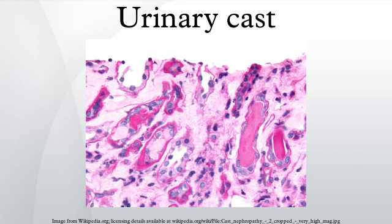In nephritic syndrome, many additional types of casts include broad and waxy casts if the condition is chronic. Fatty casts are formed by the breakdown of lipid-rich epithelial cells. These are hyaline casts with fat globule inclusions of a yellowish-tan color. If cholesterol or cholesterol esters are present, they are associated with the 'Maltese cross' sign under polarized light. They are pathognomonic for high-urinary protein nephrotic syndrome.